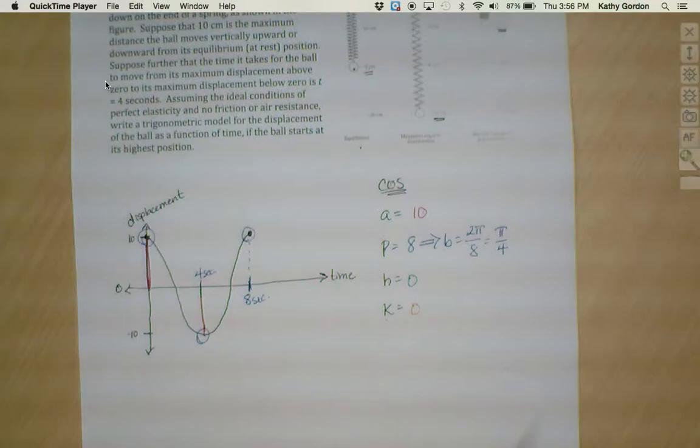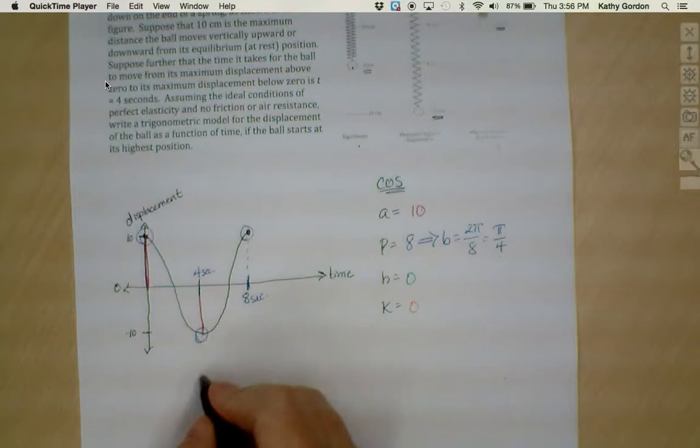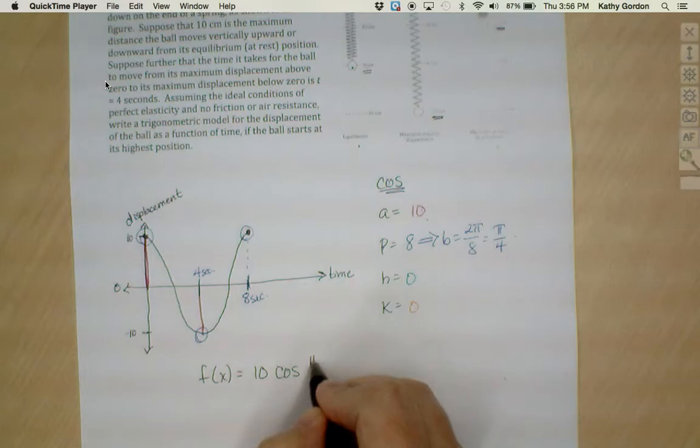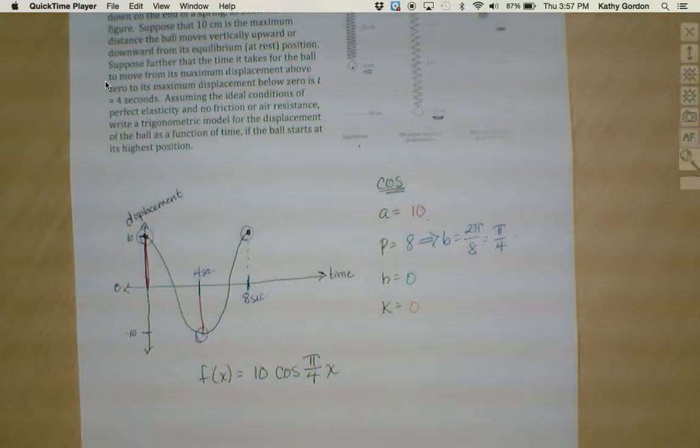Now if we put all the pieces together, our function for this ball on the end of a spring is going to be f of x equals 10 cosine pi over four x and then no h or k. So we're done. This is our function.